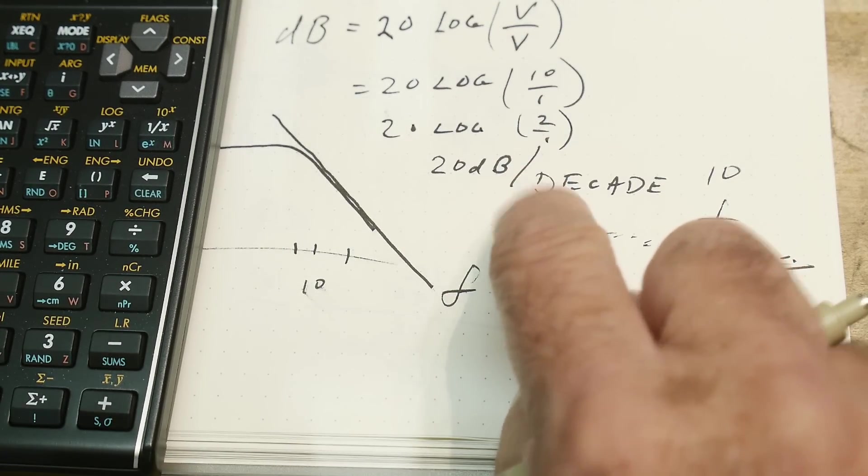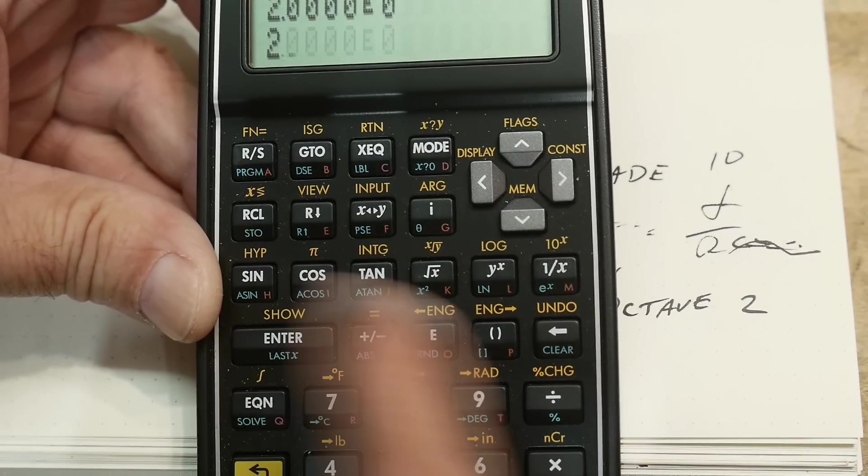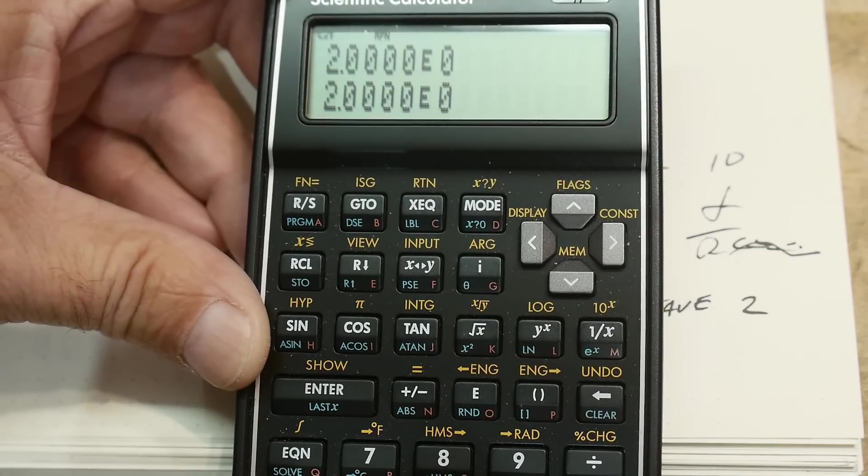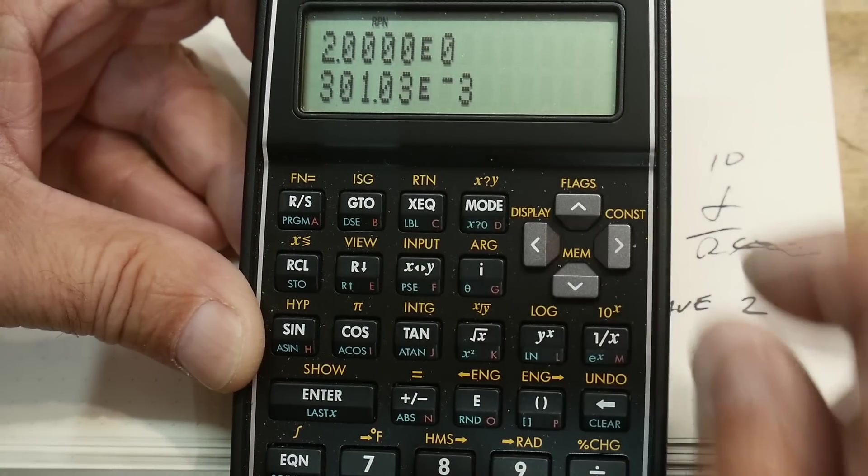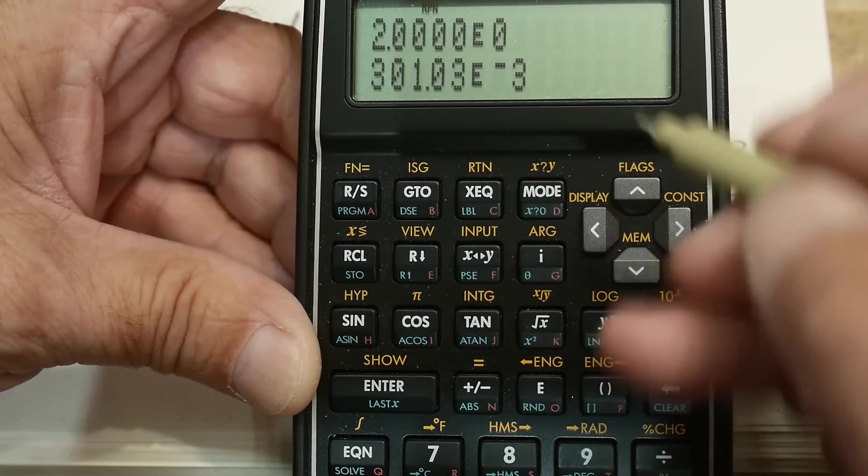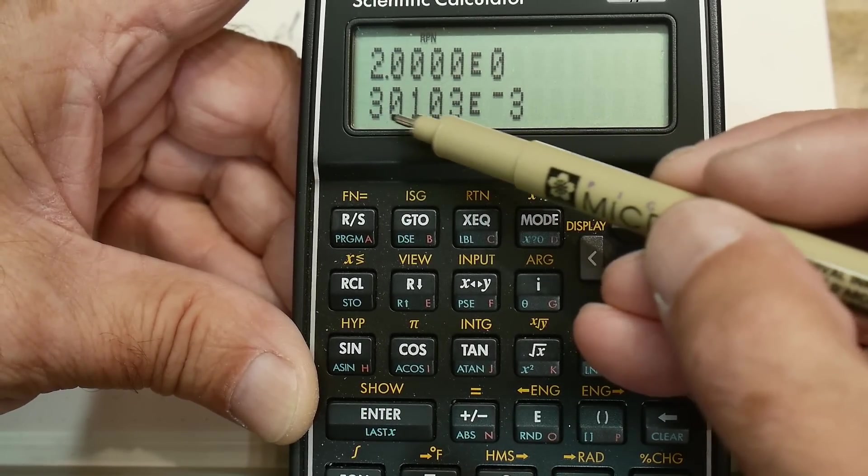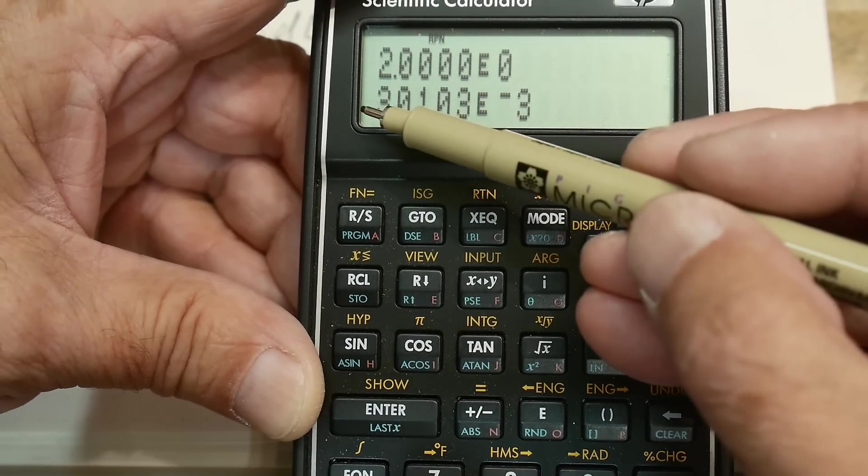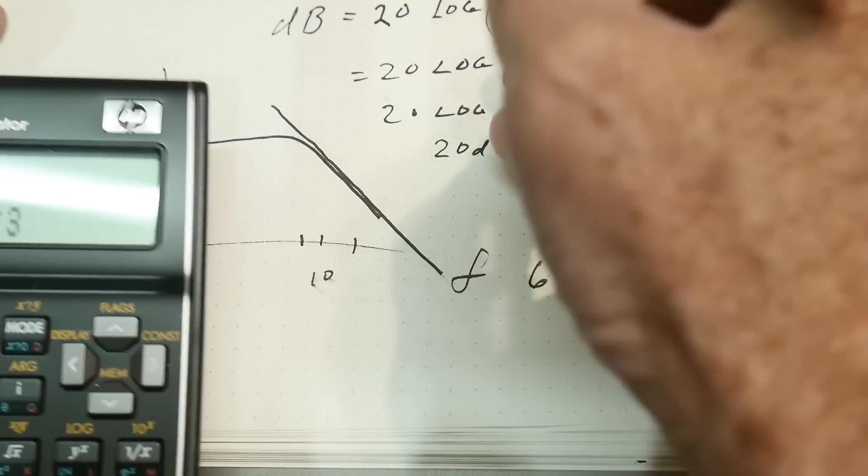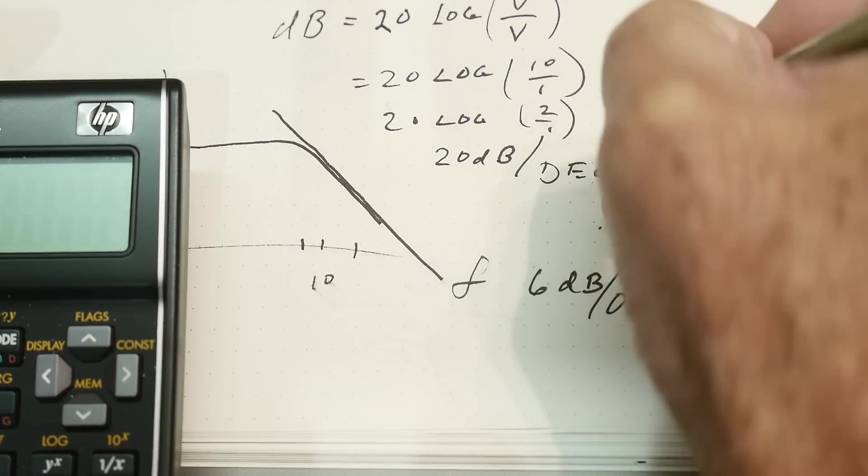What is log of 2? Now I do need a calculator. So 2, logarithm base 10, we have 0.301.